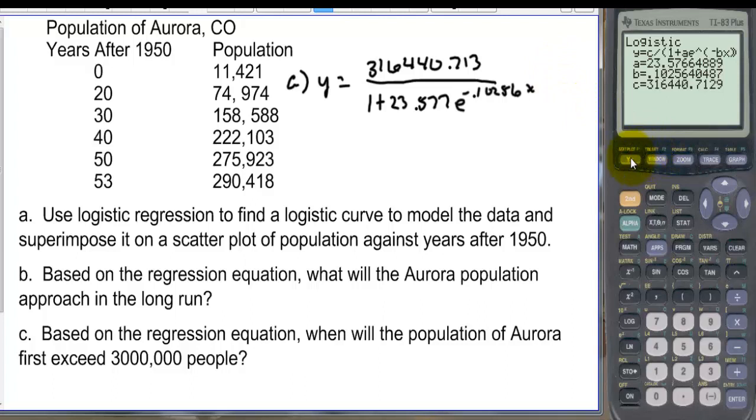Let's plug that into Y equals. Let's enter. And we have results. And then we have 316,440,713 divided by parentheses. 1 plus 23.577 and then times E to the negative 0.10256X. Let's press enter and we'll graph and see how close it follows the points pretty close.